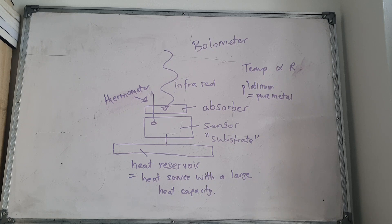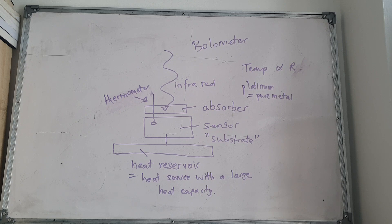When the infrared light hits the absorber, there is a change in temperature. The sensor substrate is connected to the heat reservoir, which maintains a constant temperature. Because of this, any change will result in a change in resistance. The heat reservoir is a heat source with a large specific heat capacity — if it were small, the temperature would fluctuate.